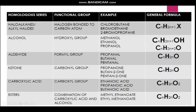Then we have alcohol. Alcohol has a functional group called the hydroxyl group. Examples are methanol, ethanol, and propanol, as you can see here. The suffix continues the trend - the suffix is '-ol'. The general formula is CnH2n+1OH, where the OH represents the hydroxyl group - so once you see the OH, you know it's an alcohol.